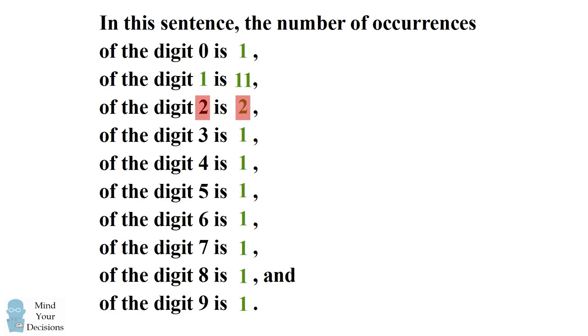Everything in this sentence works out, and this sentence is true. This is a solution to the puzzle. So the digit one occurs eleven times, the digit two occurs two times, and every other digit occurs one time.